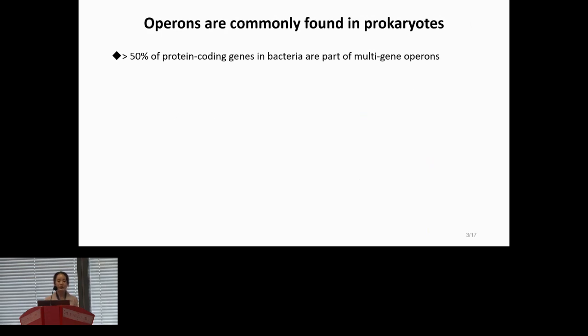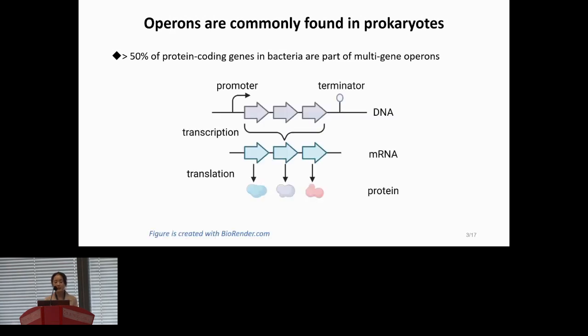Studies have found in prokaryotes, functionally-related genes are often organized into operons. For example, in bacteria, more than half of protein-coding genes are part of multi-gene operons. So what are operons? As illustrated in this figure, operons are a group of genes. They are neighboring genes on the same strand, and the transcription and translation are controlled by a single promoter upstream of the first gene and a terminator downstream of the last gene.